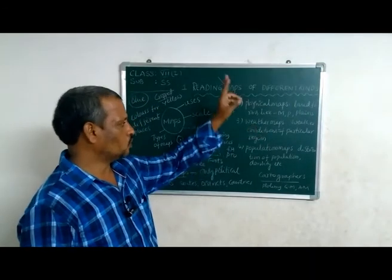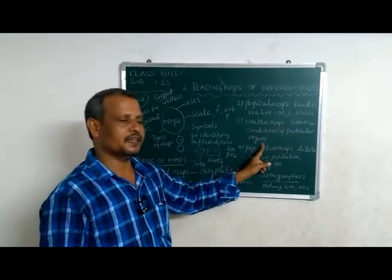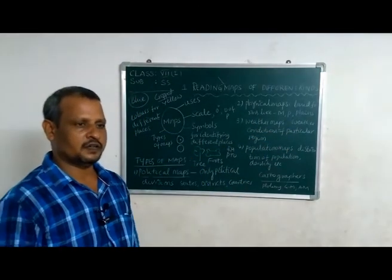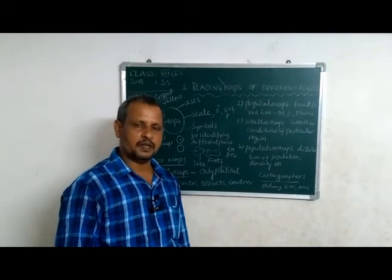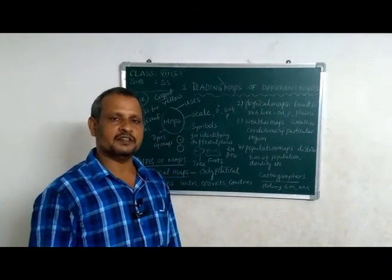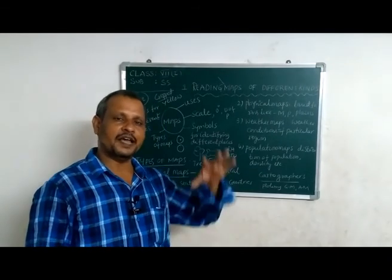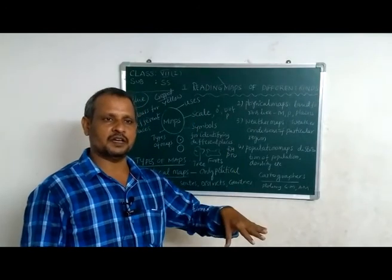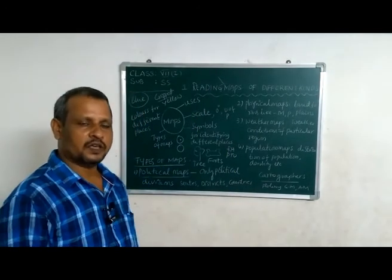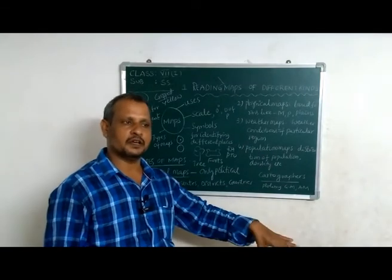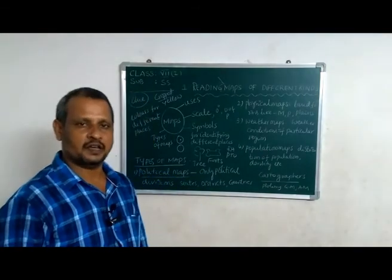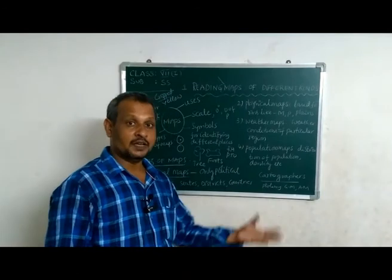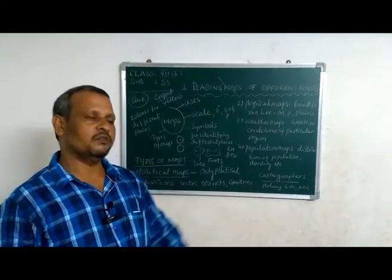Weather maps show only the weather conditions of a particular region. For example, Jaisalmer in Rajasthan experiences the highest temperatures in India. The wettest place in India is Cherrapunji in Meghalaya, which receives the highest amount of rainfall.